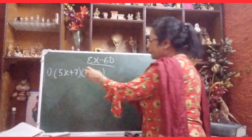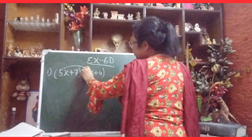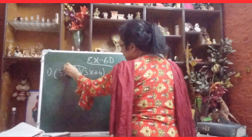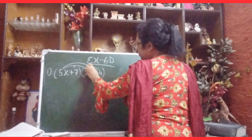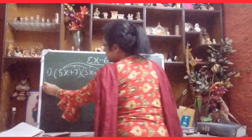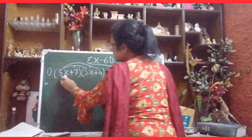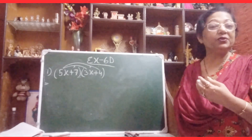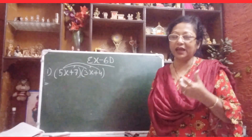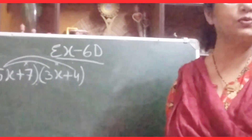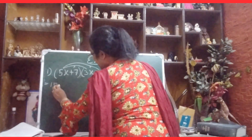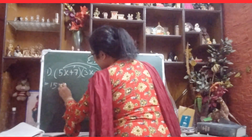Now we will simply multiply these two. First multiply 5x with 3x. So 5 times 3 is 15, and x times x is x squared. So we get 15x squared.